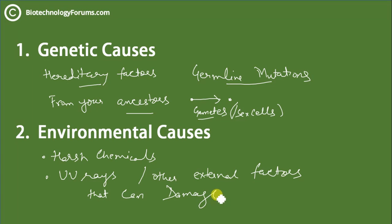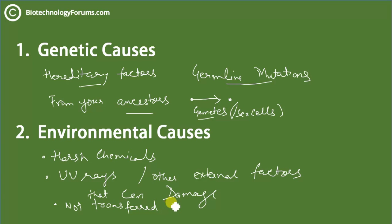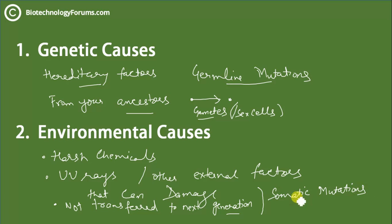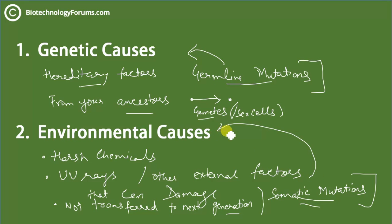Environmental causes include physical factors such as harsh chemicals, UV rays, or other external factors that can damage your DNA. For example, cigarette smoking can cause cancers because cigarettes contain chemicals that can damage DNA, which in turn activates cancer conditions. Such mutations are not transferred to the next generation because they usually do not impact the sex cells or gametes. They are therefore called somatic mutations, as opposed to germline mutations. Germline mutations are connected to genetic causes, while somatic mutations are often connected to environmental causes.